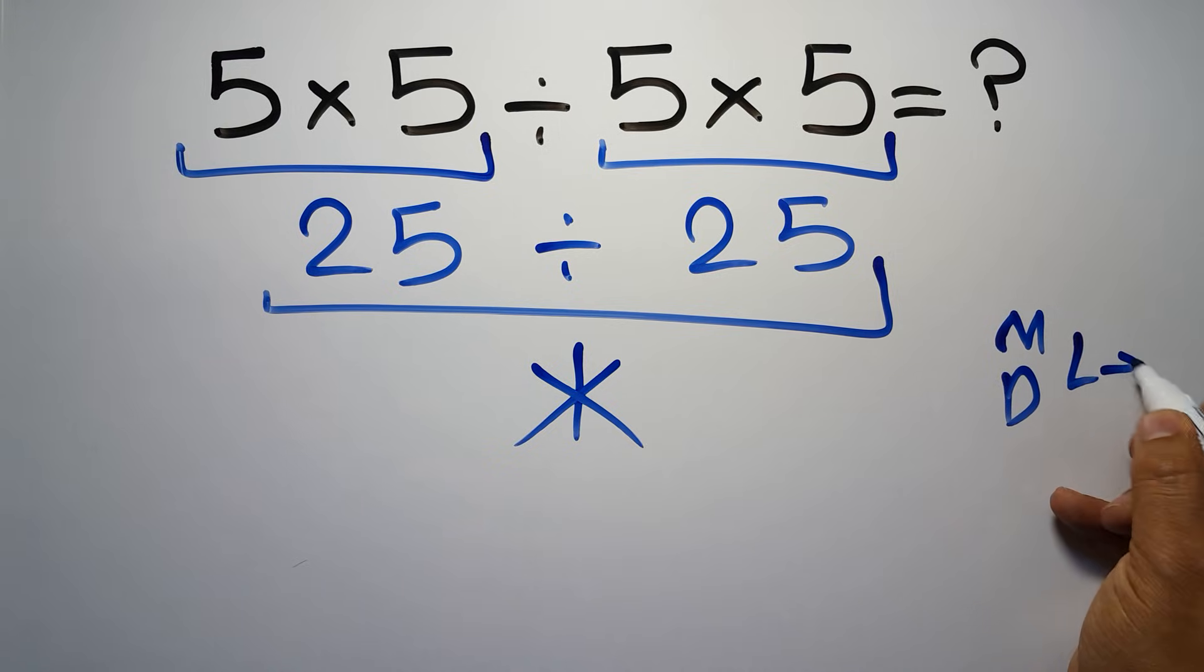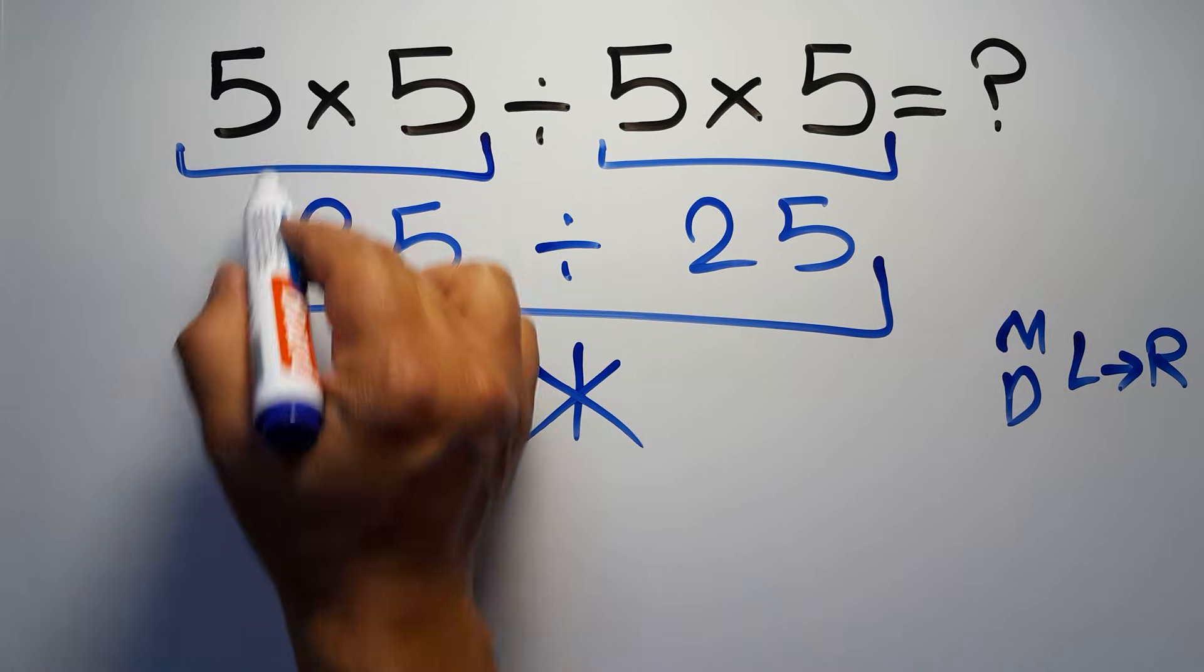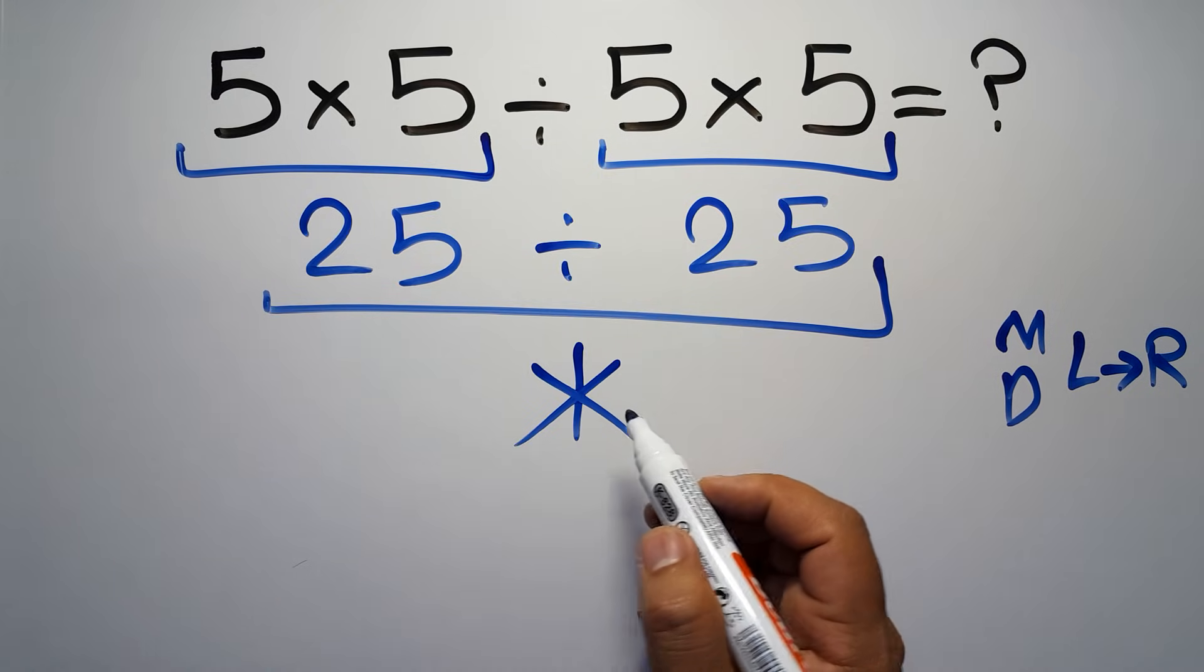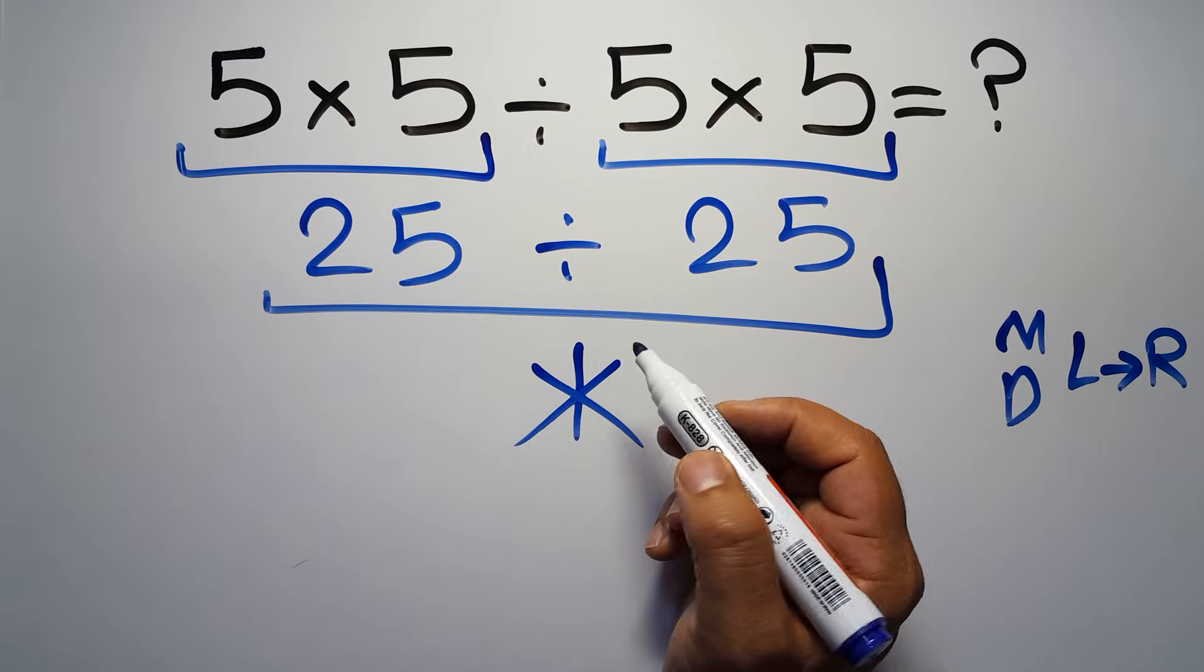We have to work from left to right. So here first we have to do this multiplication, then this division, and finally this multiplication. If we do this multiplication before this division, it is wrong.